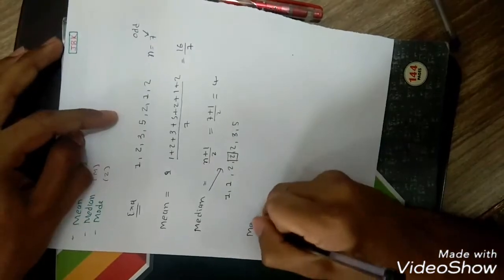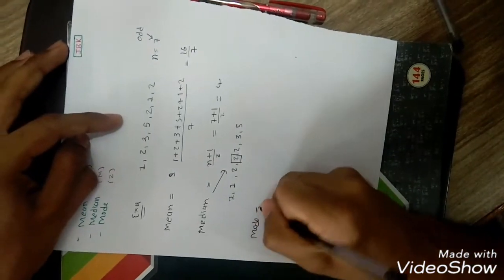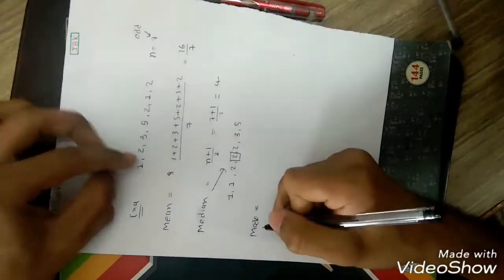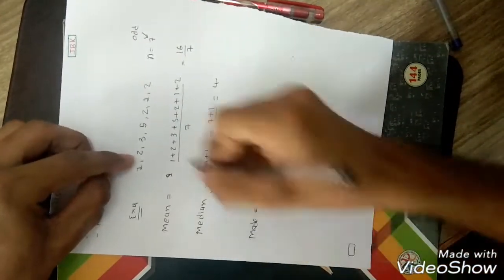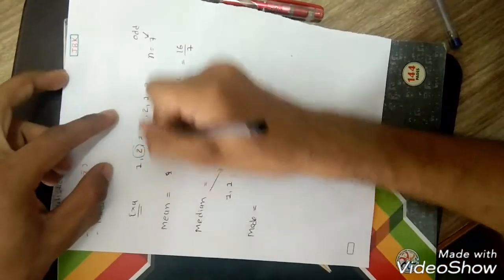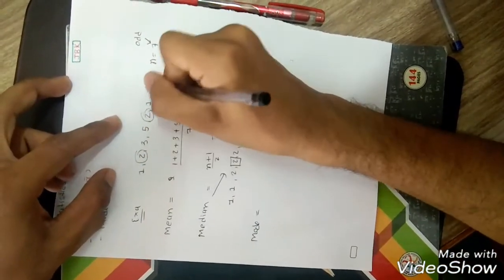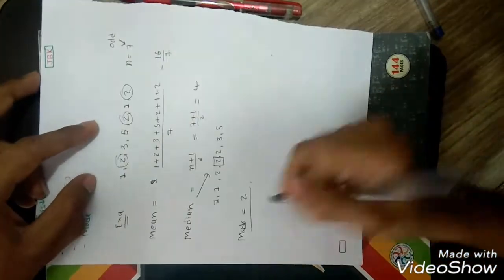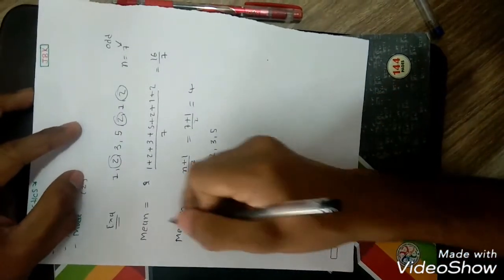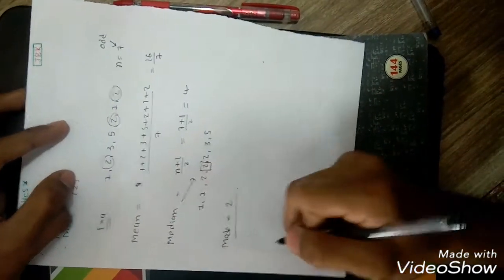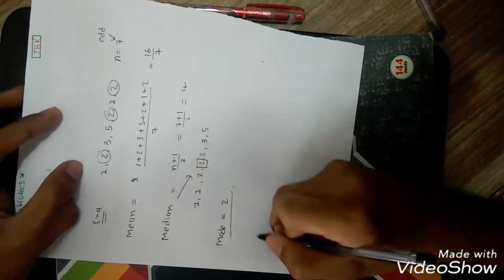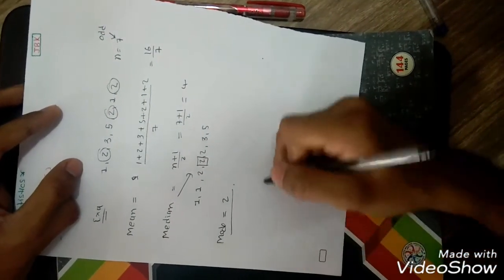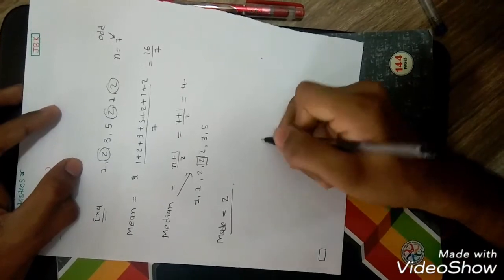So we get directly that 2 is the median. For the mode, 2 is the maximum number of times repeated, so we can directly write mode equals 2. So this is the mean, median and mode. Now let's take one more example for grouped data.